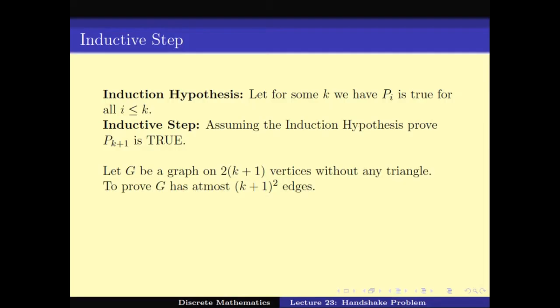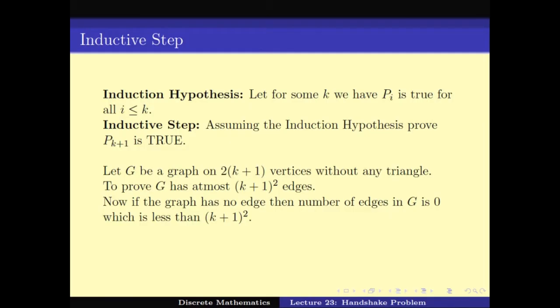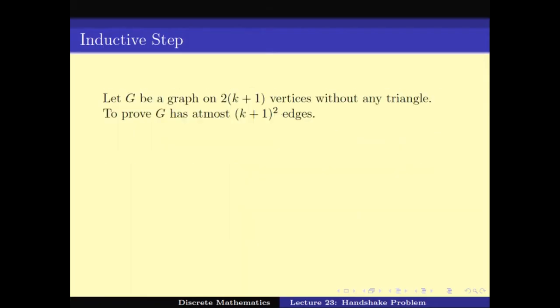We should use this graph and then use the induction hypothesis to prove that this graph has fewer than (k+1)² edges. For the inductive step, we have the induction hypothesis and we want to prove P(k+1). We start with: let G be a graph on 2(k+1) vertices without any triangles. We have to prove that G has at most (k+1)² edges. We somehow have to convert G to a smaller instance so that we can apply the induction hypothesis.